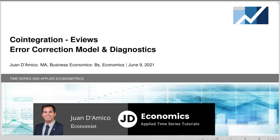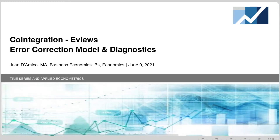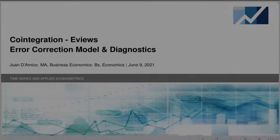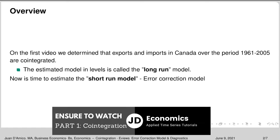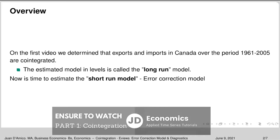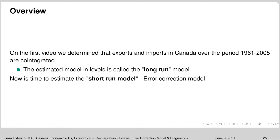Hello everyone, welcome back to this co-integration tutorial series. This is the second part where we are going to be talking about the error correction model and the diagnostics. As an overview, in the first video we determined that exports and imports in Canada over the period 1961–2005 are co-integrated. The model estimated in levels on the first video is called a long-run model. Now it's time to estimate the short-run model.